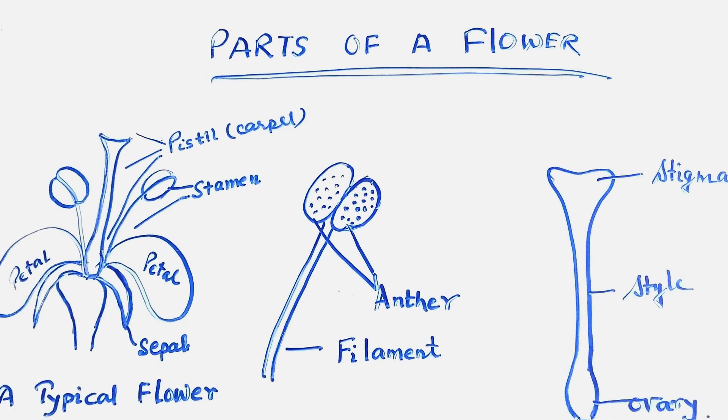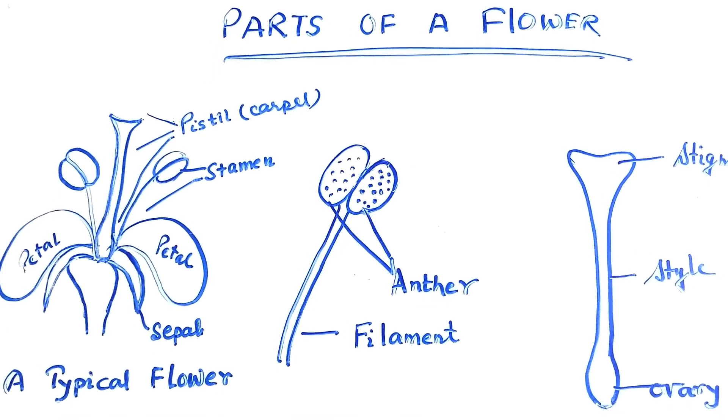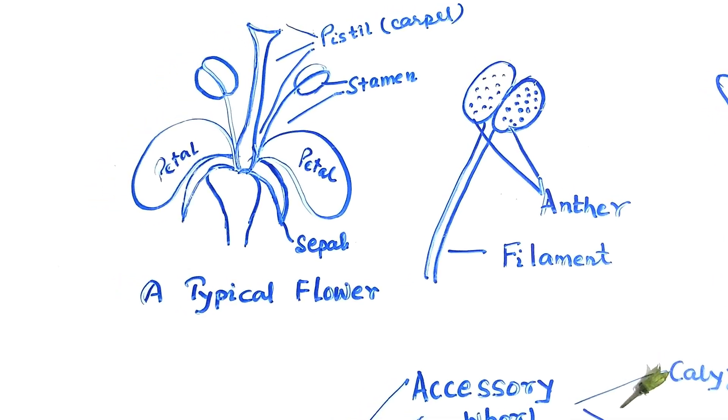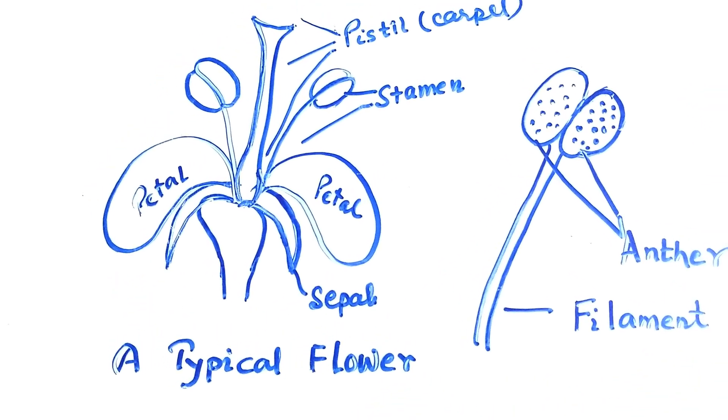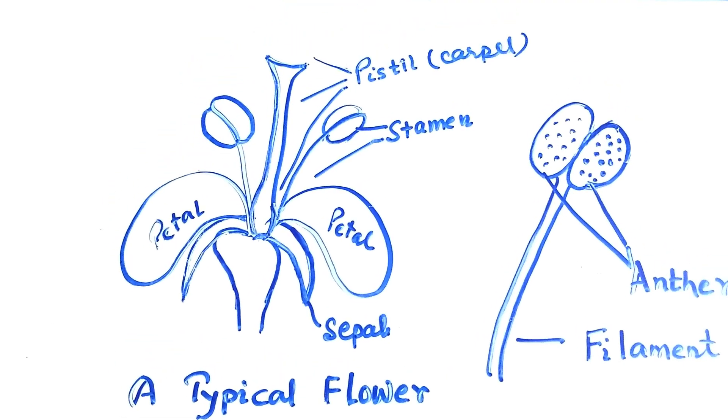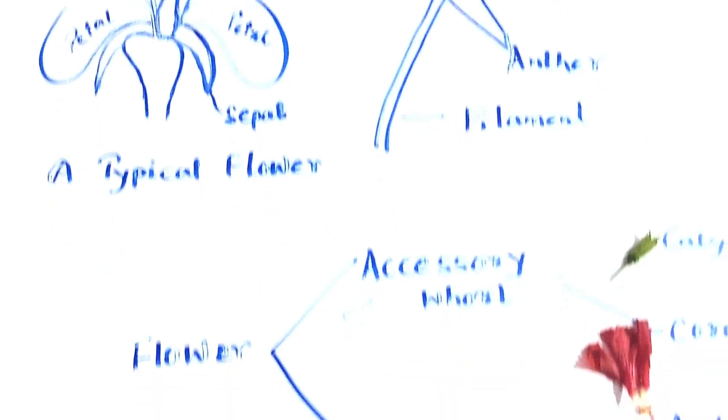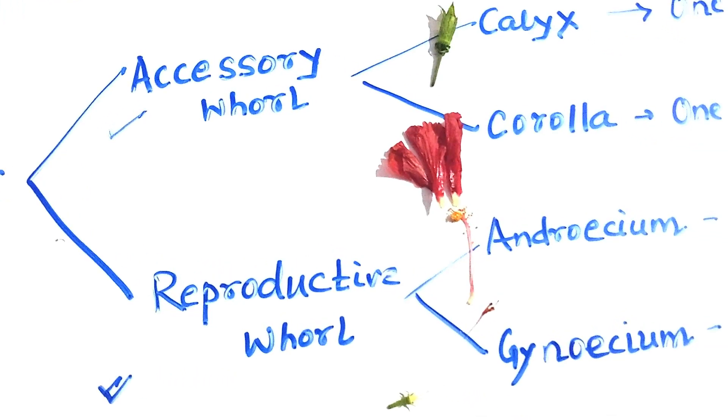Today we are going to study the parts of a flower. You can see the hibiscus flower, a typical flower having all four parts: sepals, petals, stamens, and carpel. We can study in detail that a flower has two whorls, accessory and reproductive. Calyx and corolla are called the accessory whorl.